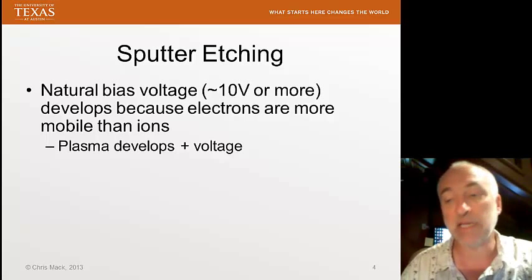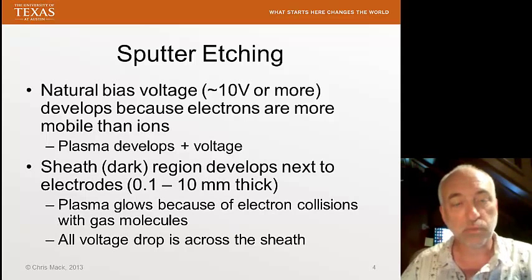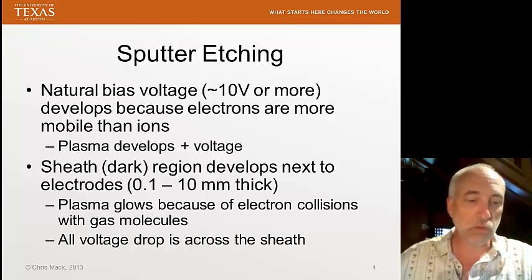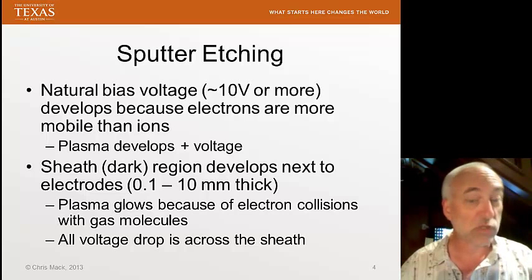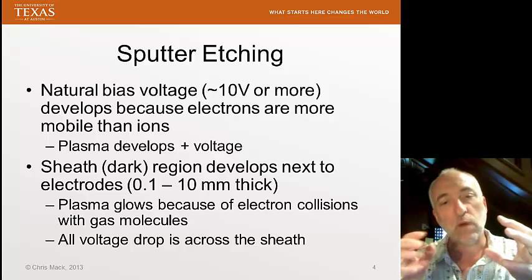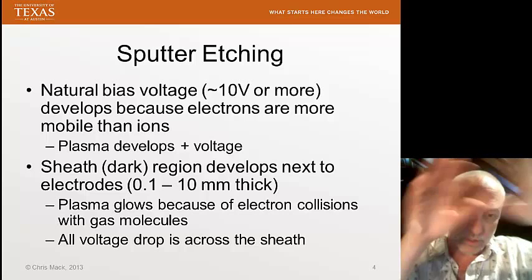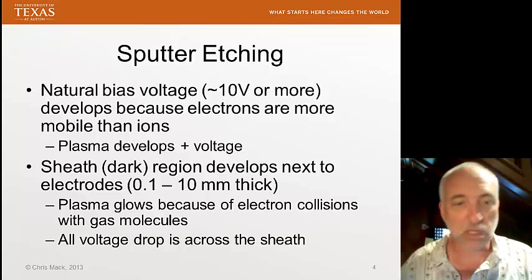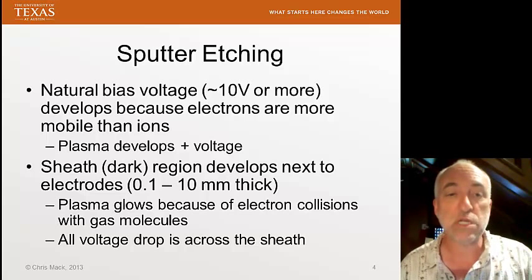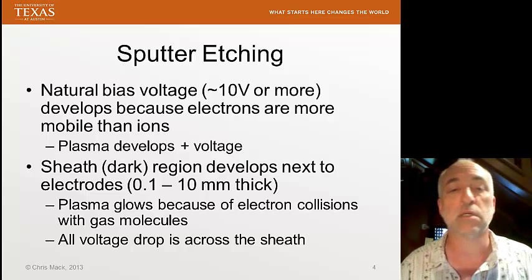That bias voltage adds to whatever negative voltage we apply to the wafer to get the acceleration we want. The plasma glows — whenever an electron collides with the gas molecules, electrons go into higher orbitals and eventually fall back down, releasing photons. You can tell you've created a plasma because you get this glowing ball of gas. But there's a region all around the chamber walls where there aren't enough electrons because they accelerate to the positive voltage of the electrode and disappear. We call this region the sheath or dark region near the electrodes.